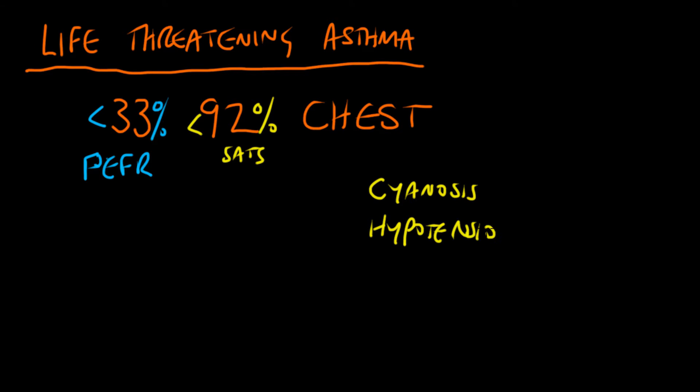C is cyanosis, H is hypotension, E is exhaustion, S is silent chest where you can't hear anything if you listen to the chest, and T is tachycardia. Any of these features can indicate life-threatening asthma.